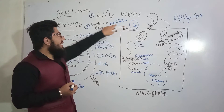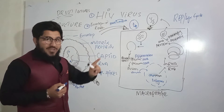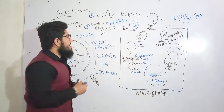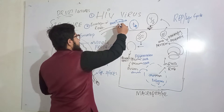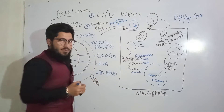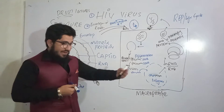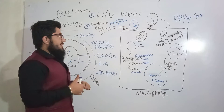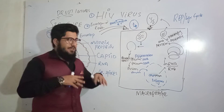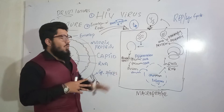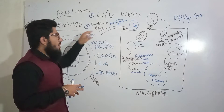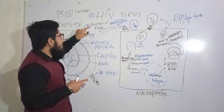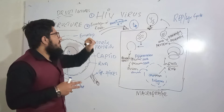Because this enzyme converts RNA into DNA, it performs a reverse mechanism, and so it is named reverse transcriptase. Because of this particular mechanism — the synthesis of DNA from RNA — this virus is named a retrovirus. So, HIV virus is actually an enveloped RNA retrovirus.